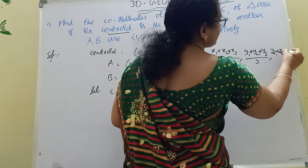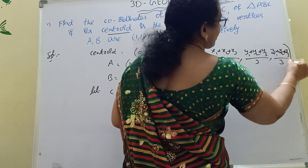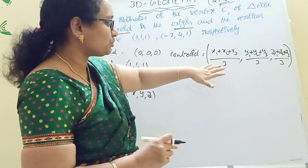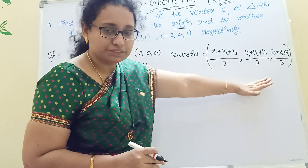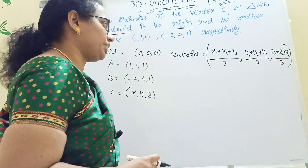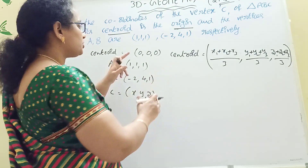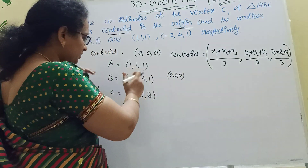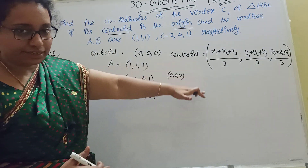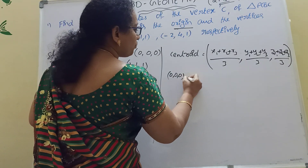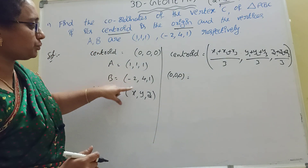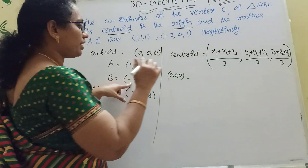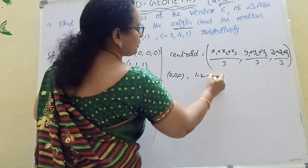Now centroid is (0, 0, 0). And x1 is 1, x2 is -2, x3 is unknown. So we take: 1 minus 2 plus x, by 3. For y: 1 plus 4 plus y, by 3. For z: 1 plus 1 plus z, by 3. Like this, x1 plus x2 plus x3 by 3 equals the centroid coordinate.